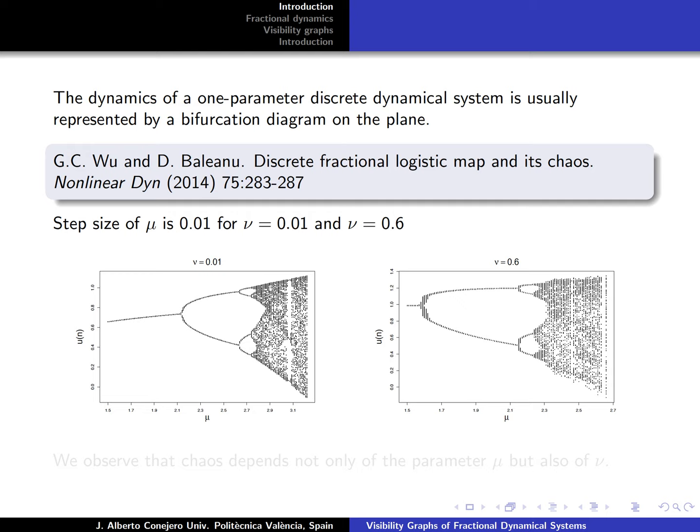Observe that these diagrams resemble the diagrams that we have for the logistic equation. What we observe is that here, the chaos doesn't only depend on the parameter μ, but also depends on the parameter ν.